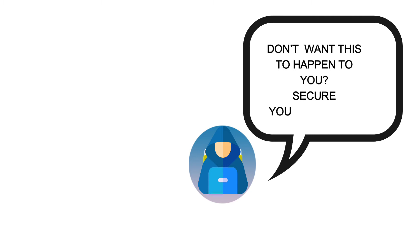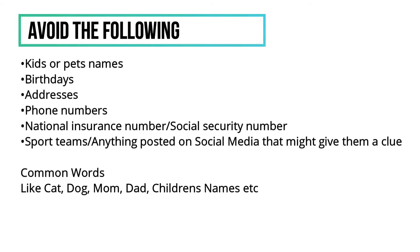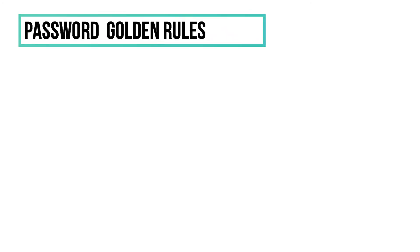Let me show you how to secure your password - some rules you can apply and things to avoid. First, things to avoid: kids' names or pets' names, birthdays, addresses, phone numbers, national insurance numbers, sports teams, common words like 'cat' and 'dog', mom, children's names. These are too easy to guess and give a hacker an easy way into your account.